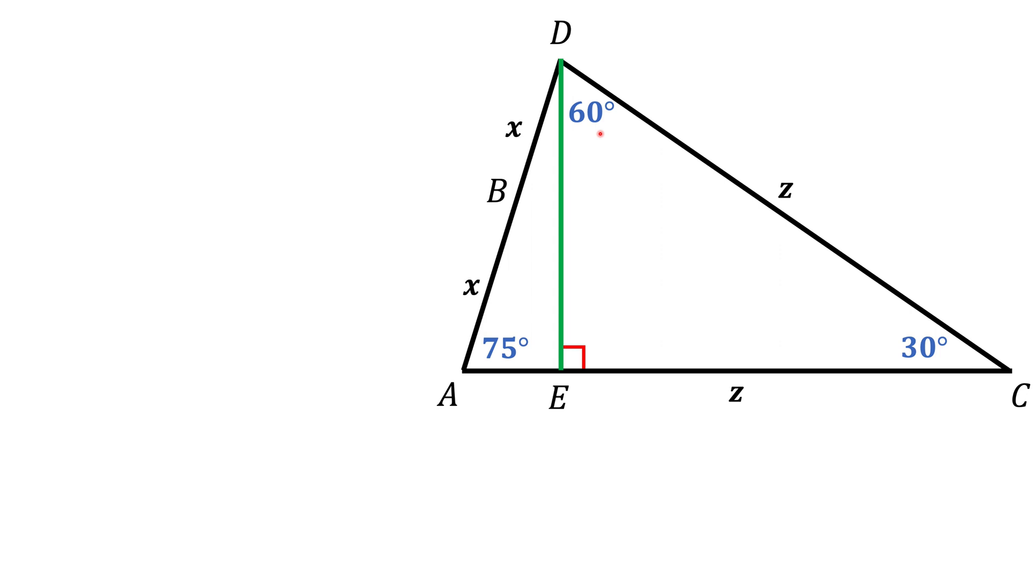So if you're not familiar with this triangle, I posted a link below where I discuss the properties of this triangle in the details. But what we need to know here is that the side of this triangle that is opposite of 30 degree angle, so in this case, this green side DE, is half of the hypotenuse. And in our case, hypotenuse is z.